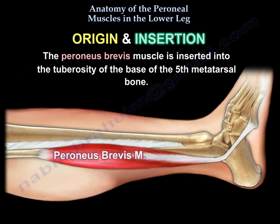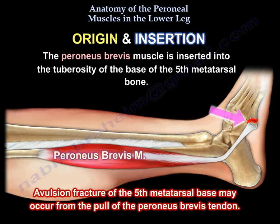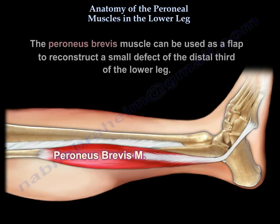The perineus brevis muscle is inserted into the tuberosity of the base of the fifth metatarsal bone. An avulsion fracture of the fifth metatarsal base may occur from the pull of the perineus brevis tendon. The perineus brevis muscle can be used as a flap to reconstruct a small defect of the distal third of the lower leg.